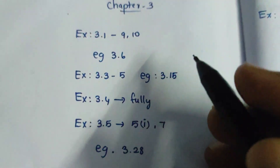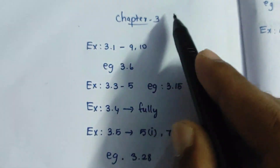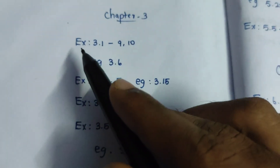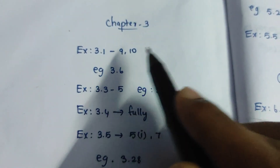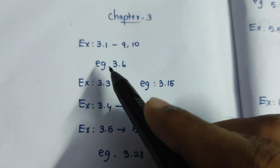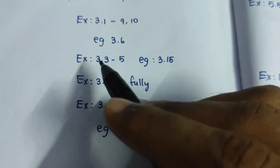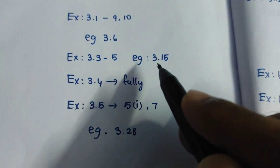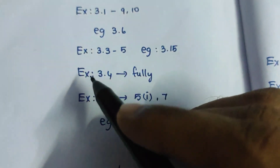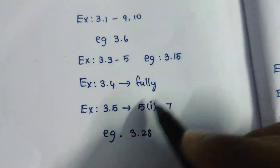It's very easy, so if you learn the same way, you can easily score the marks. Chapter 3, exercise 3.1, 9th sum, 10th sum. Example 3.6, exercise 3.3, 5th sum, example 15. Exercise 3.4, maybe 4th sum.